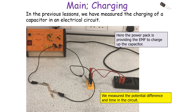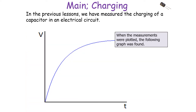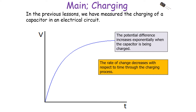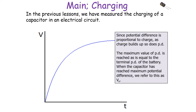In previous lessons, we measured the charging of a capacitor in an electrical circuit, where the power pack provides the EMF to charge the capacitor and we measure potential difference against time. When we plotted these measurements, we found that the potential difference increases as the capacitor charges, but the rate of change decreases with respect to time. This is an example of exponential decay — the rate of increase decreases over time. Since potential difference is proportional to charge, as charge builds up, so does potential difference, reaching a maximum equal to the terminal PD of the battery.